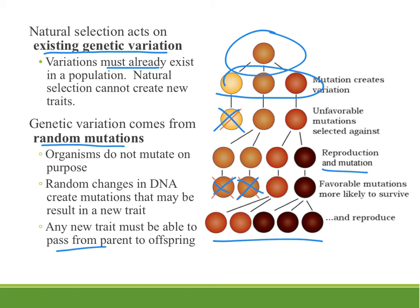This happens over many generations — the chart here shows six different generations. This is not something that happens to an individual, but what gets passed on as organisms reproduce. Each new generation shows how the frequency of that trait has changed.